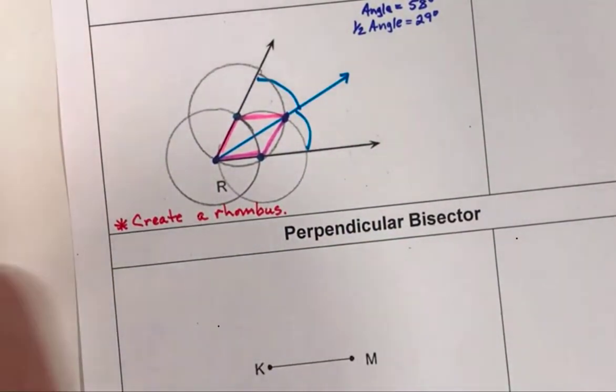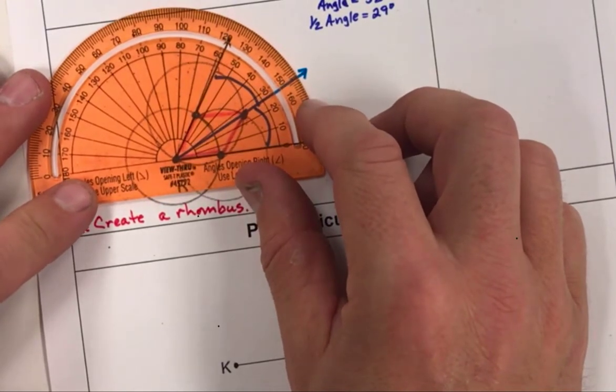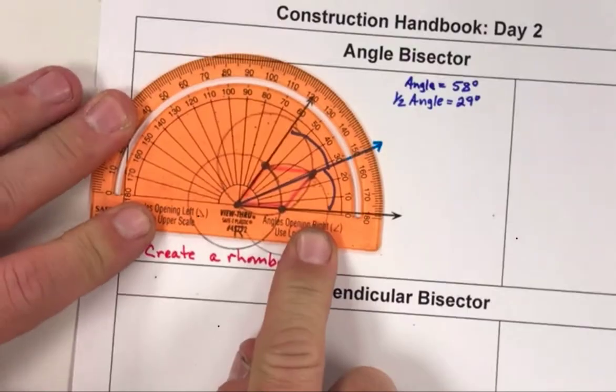So take out your compass and just verify that you did it correctly. As I do this, you're going to notice that I've got pretty close, let's get it lined up here, 29 degrees, and you can see that works.